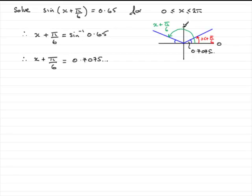So to get the green angle, all we need to do is turn half a turn, which is pi radians minus the 0.7075. So using your calculator, type in pi minus 0.7075 and you should find you get 2.4340 and so on.